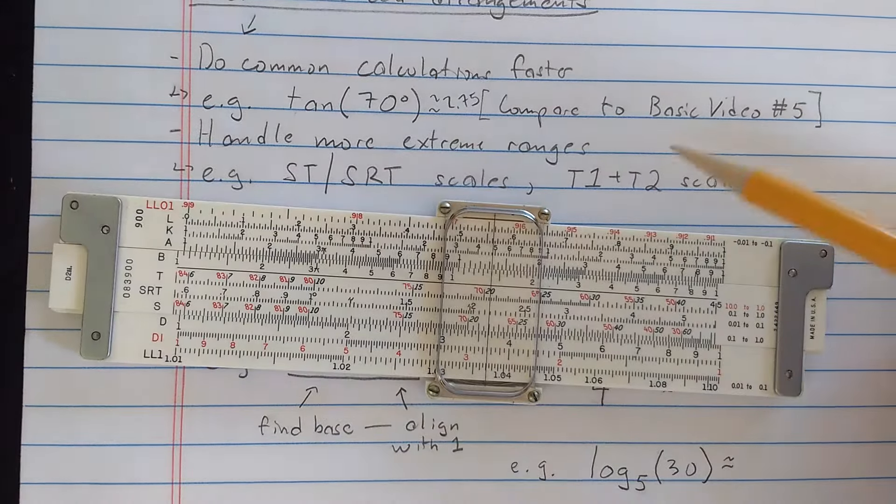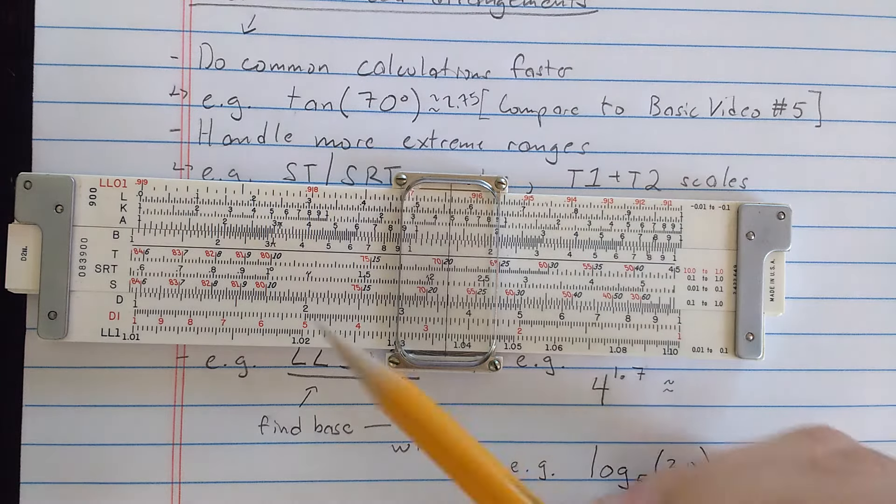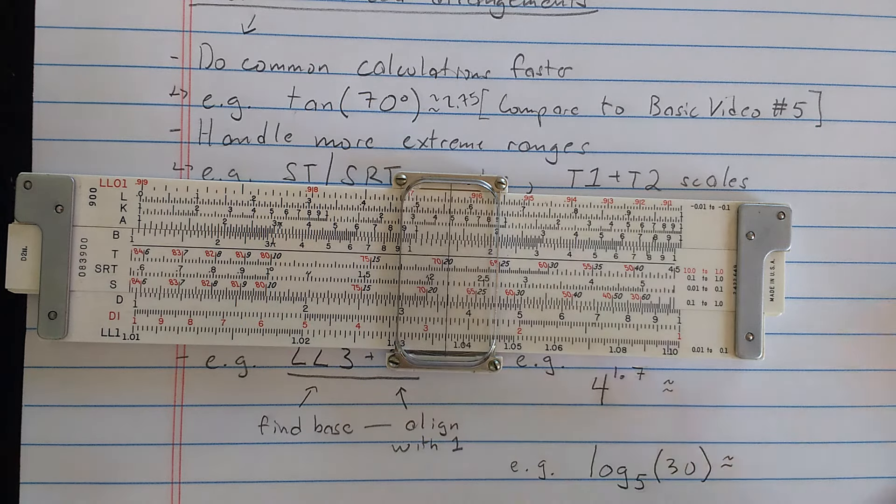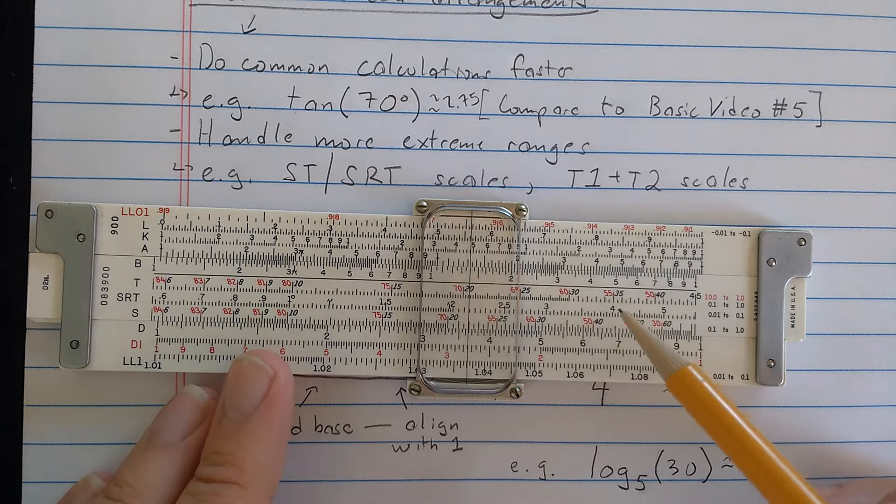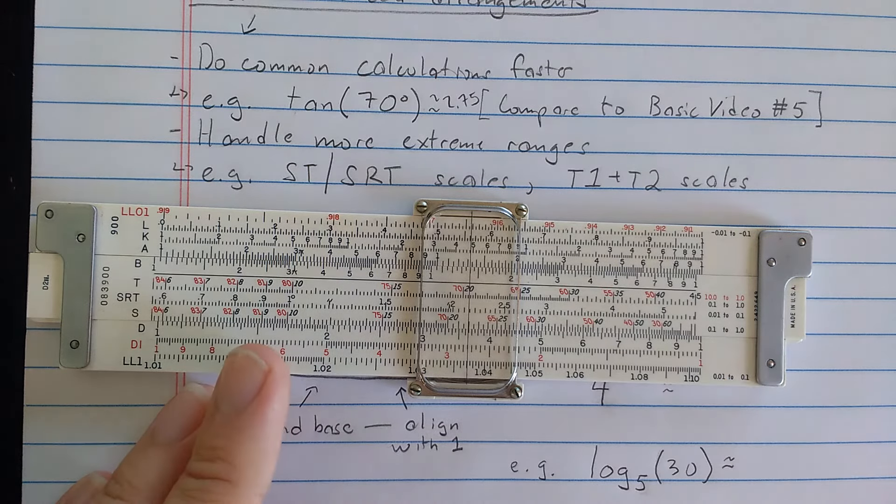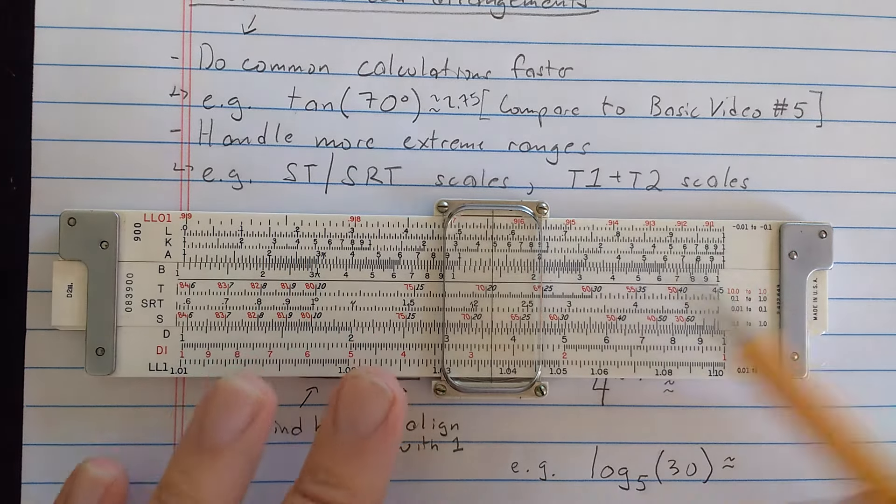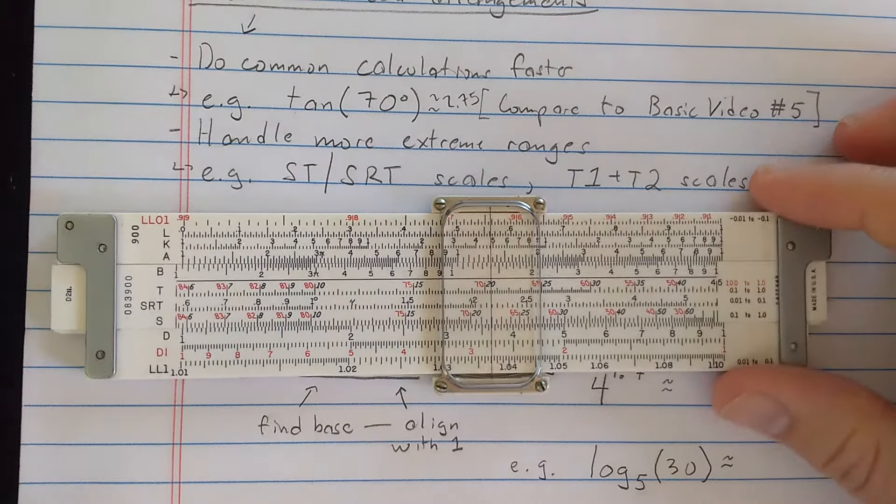We saw on the other advanced slide rule I showed you a T2 scale, which eliminates the need for using the reciprocal scale for reading the tangents greater than 45 degrees. But again, that kind of continues the tangent scale on the right side instead of on the left side. The general idea is you get these scales which continue, so you don't have to use other tricks for computing things.